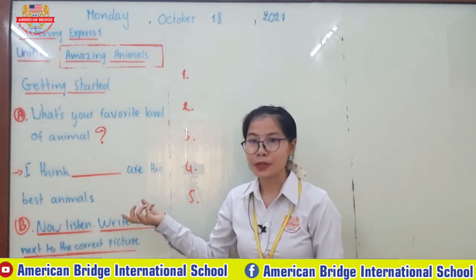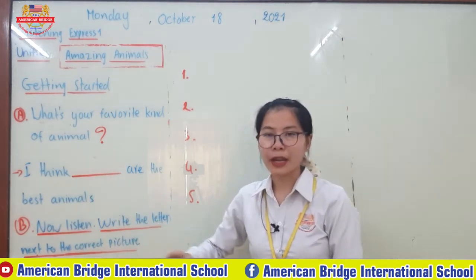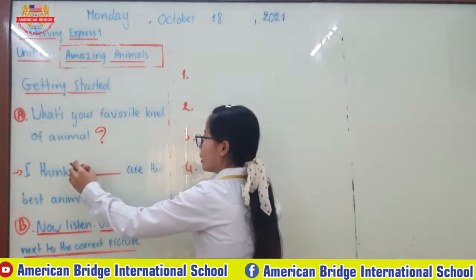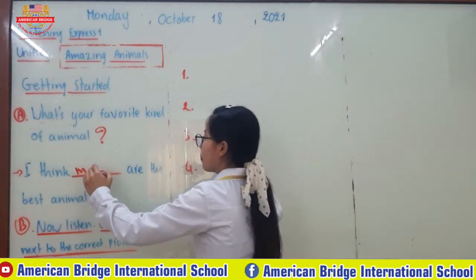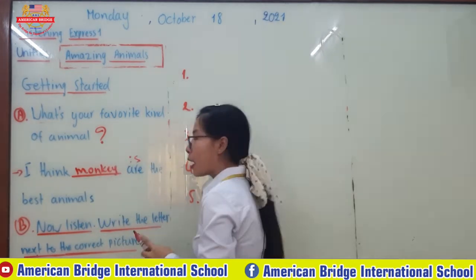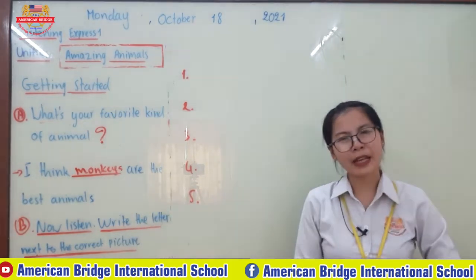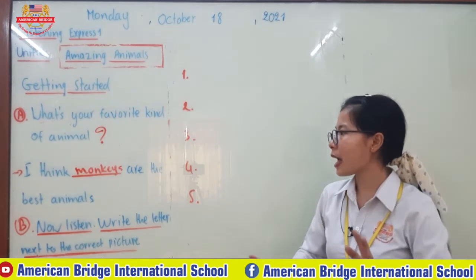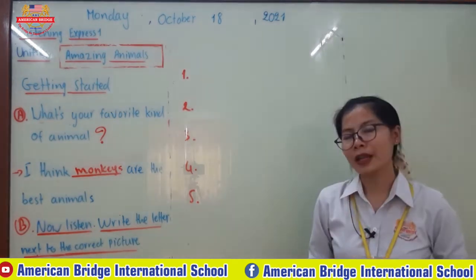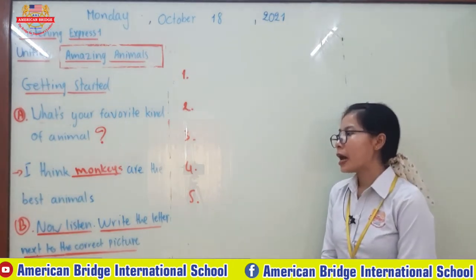We use 'are' because you're thinking of animals in general. For example, if you say only one: 'I think monkey is the best animal.' But you can also write it as plural — 'I think monkeys are the best animals' — because there are many kinds of monkeys. You can write whichever animal you think is the best.